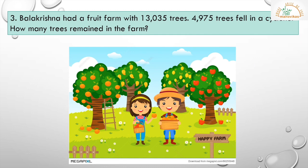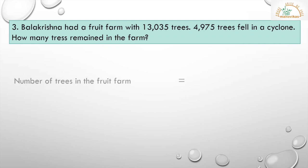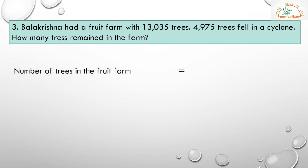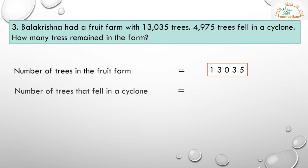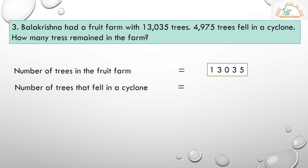Let's take the third problem. Balakrishnan had a fruit farm with 13,035 trees. 4,975 trees fell in a cyclone. How many trees remain in the farm? The number of trees in the fruit farm is equal to 13,035. The number of trees that fell in a cyclone is equal to 4,975.